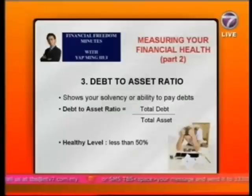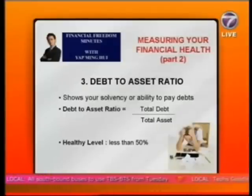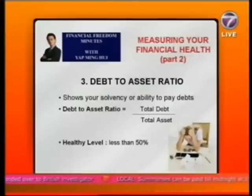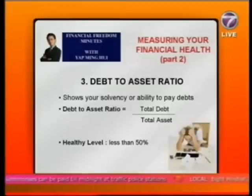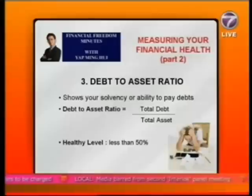Why is it important to keep the Debt to Asset Ratio below 50%? Imagine someone with an 80% ratio. If a creditor decides to recall the loan, you may need to sell assets to settle the debt. But with only a 20% margin above your debt level, your asset may be sold at a distressed price — perhaps only 60% to 70% of its actual value — leaving you unable to cover the debt. Also, a very high Debt to Asset Ratio makes it difficult to service the loan when you experience a loss of income. So always keep the Debt to Asset Ratio less than 50%.